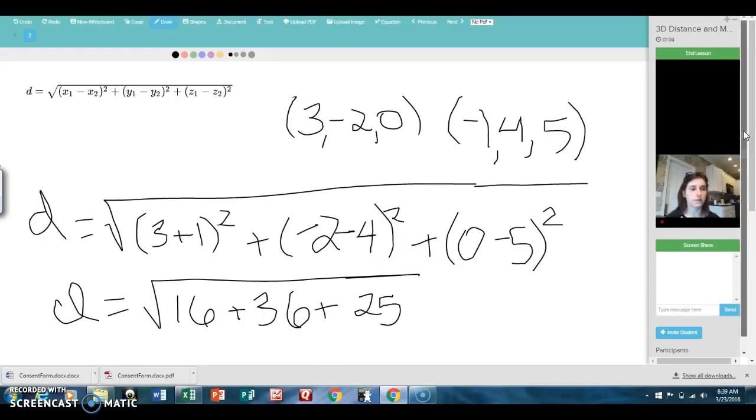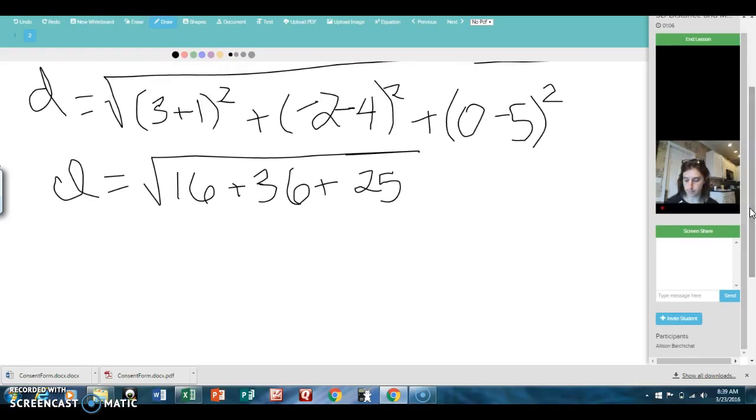Okay, then we're going to add this stuff up and simplify our radical. I've got a calculator here just for the sake of time. It adds up to 78. Square root of 78. Let's see if that can be simplified at all.